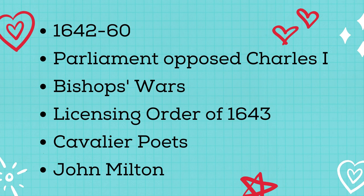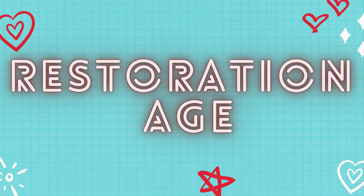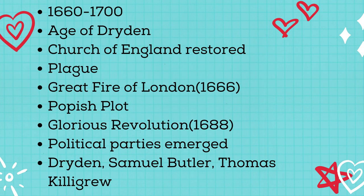John Milton was the most famous poet who lived during this age. Followed by the period of the Civil War, we have the Restoration Age, with a timeline from 1660 to 1700. It is also called the Age of Dryden. It was in this age that the Church of England was restored. Plague and the Great Fire of London were the two calamities that took place in this age. The Popish Plot was plotted against Charles II. The Glorious Revolution of 1688, also called the Bloodless Revolution, took place during the Restoration Age.